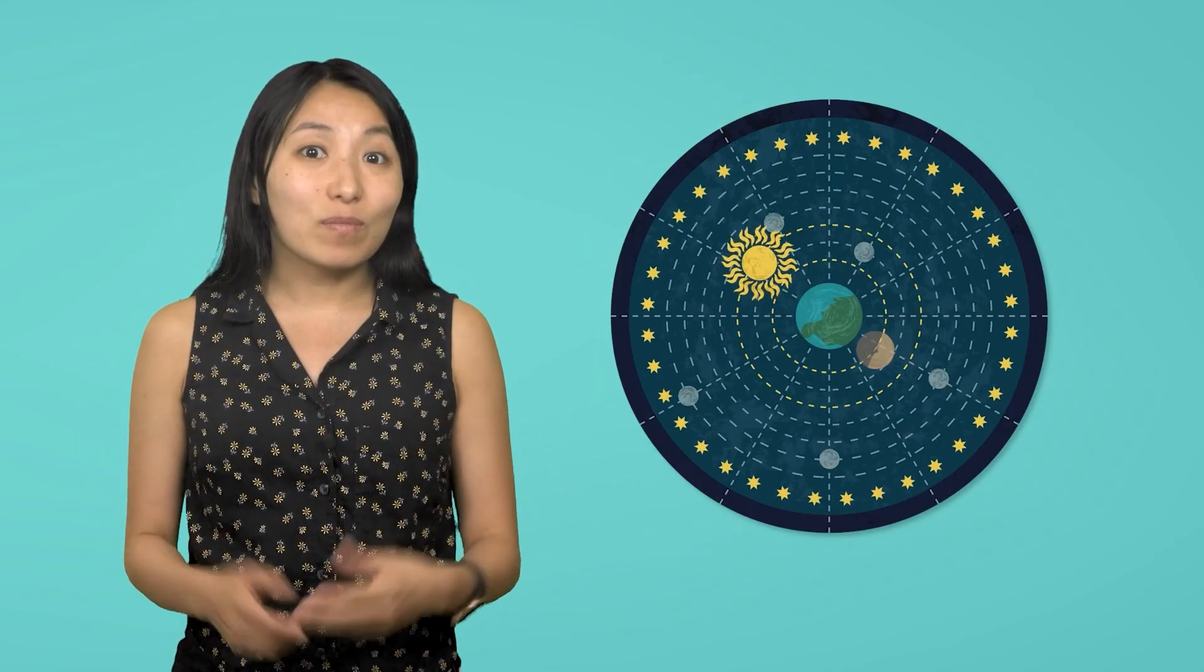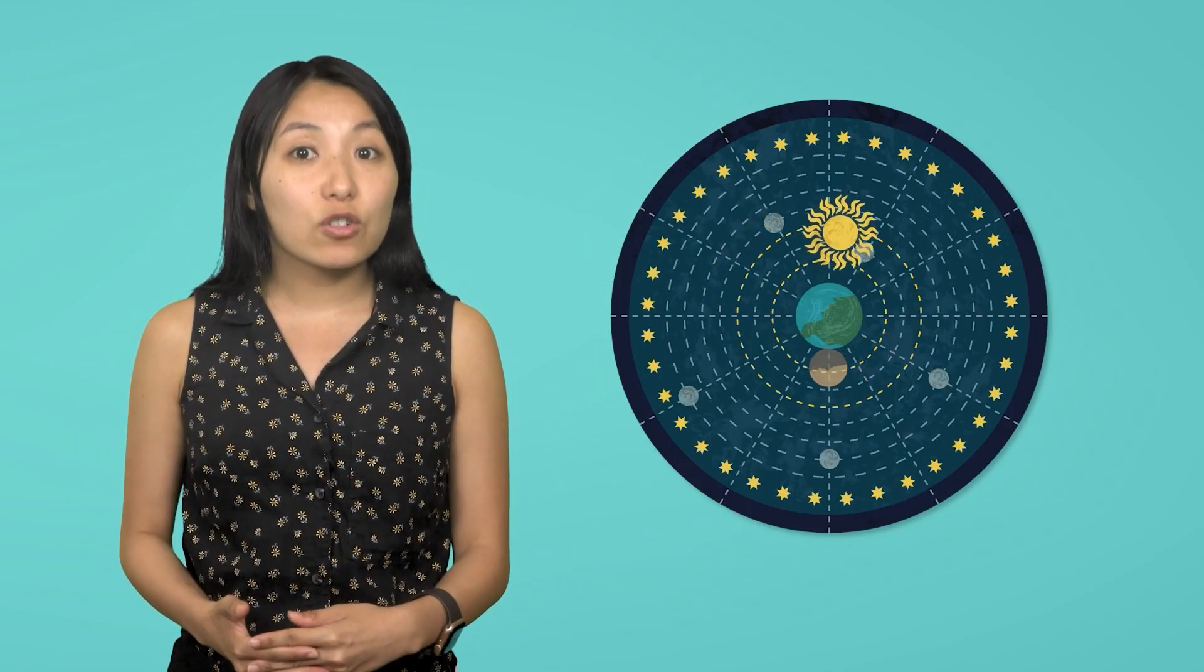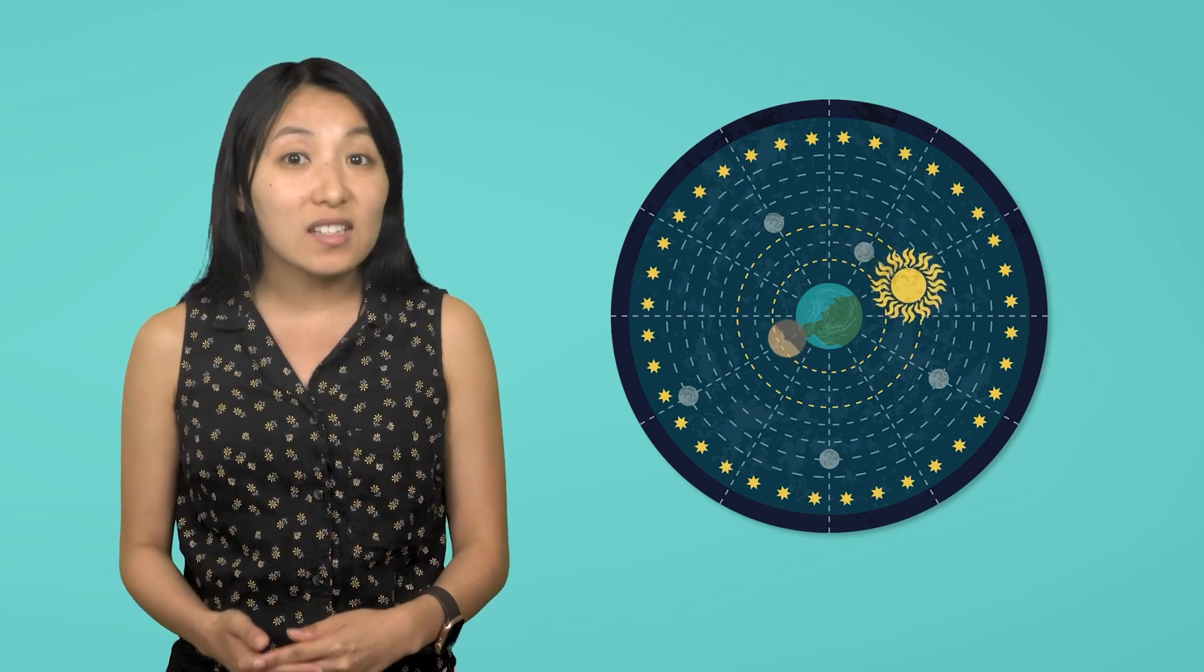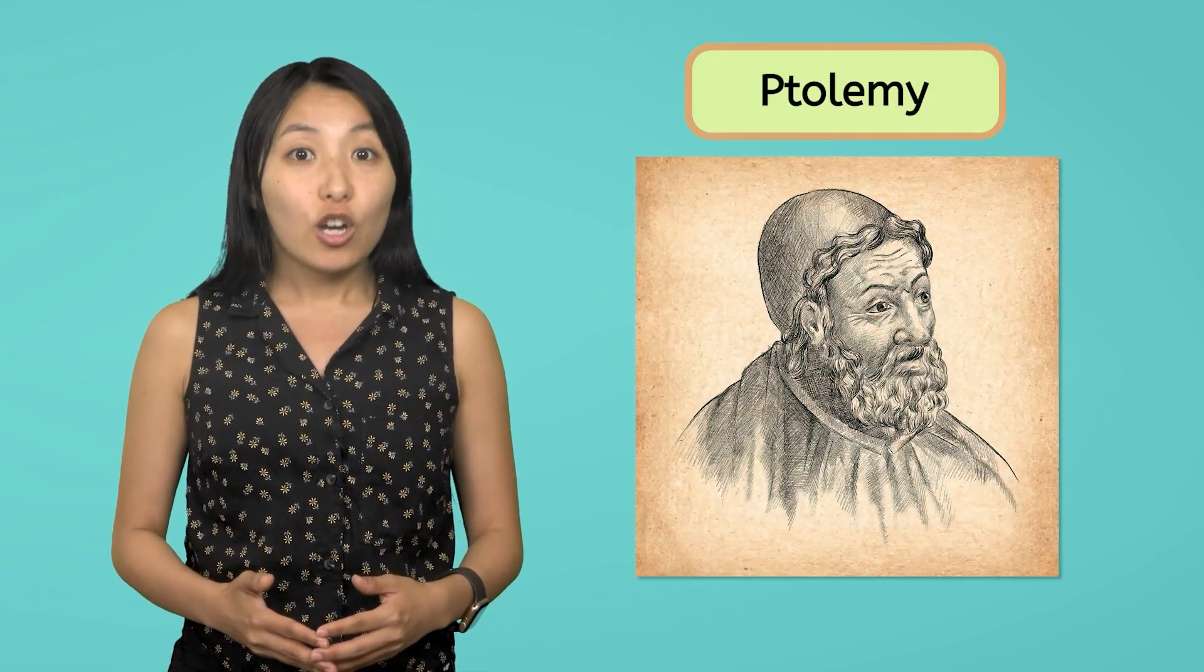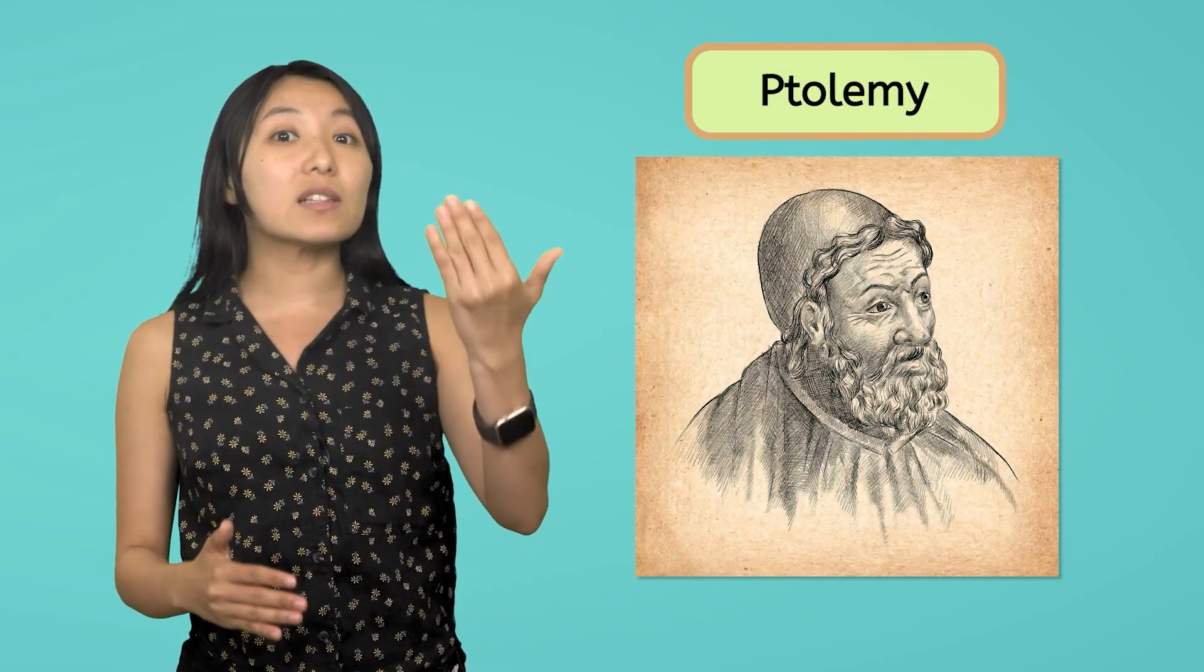So even though it had some flaws, Aristotle's geocentric model was pretty widely accepted until around the year 100 CE, when an Egyptian mathematician named Ptolemy took the geocentric model to the next level.